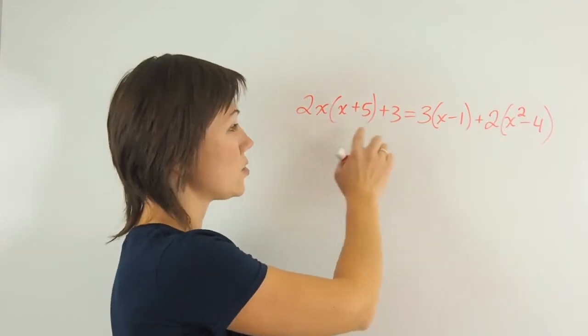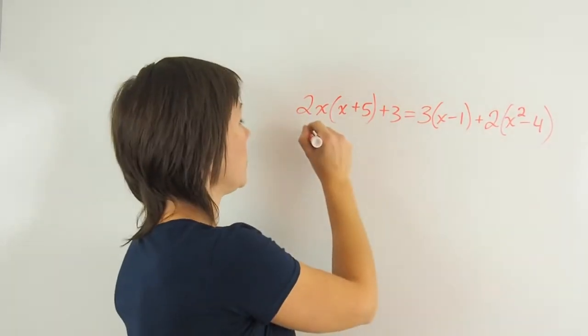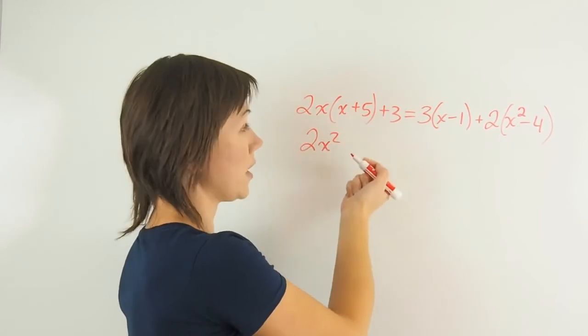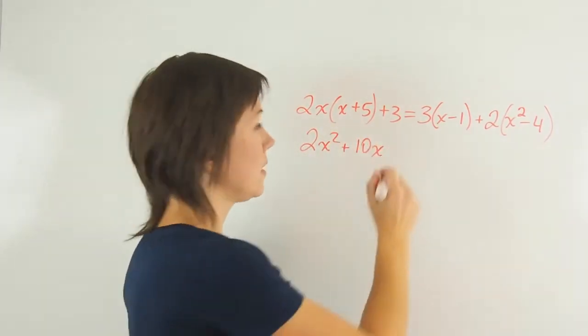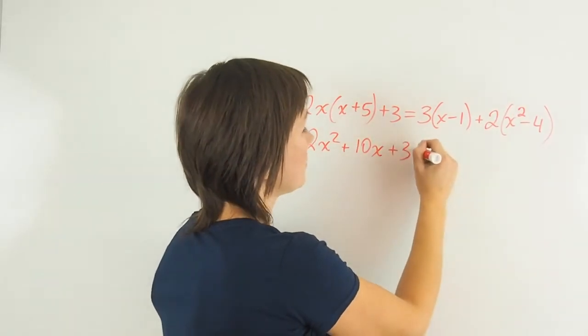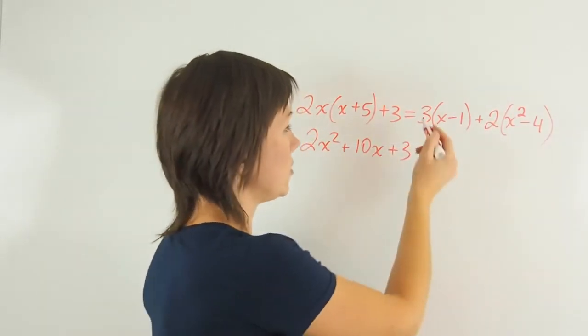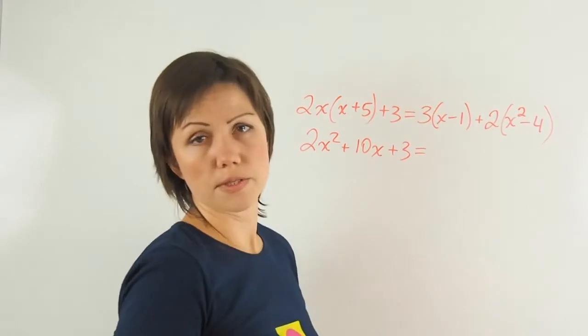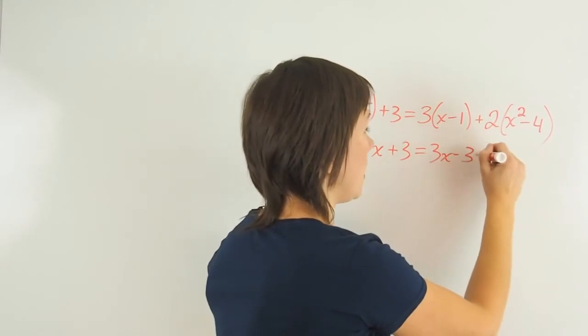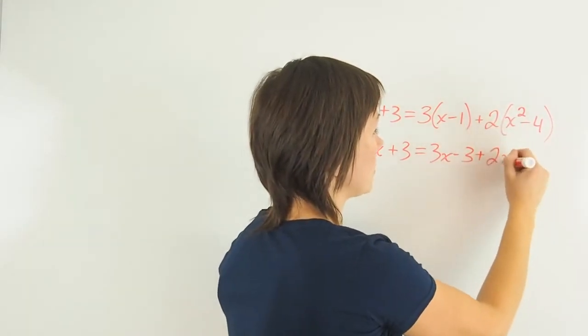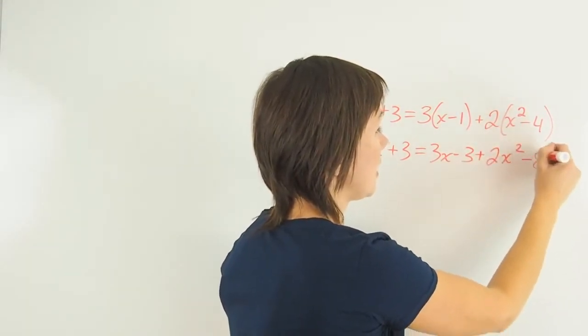2X times X, 2X times 5, will give me 2X squared plus 10X. Then plus 3 equals. Now distribute 3 over each term inside the brackets, and you'll get 3X minus 3, and then plus 2X squared minus 8.